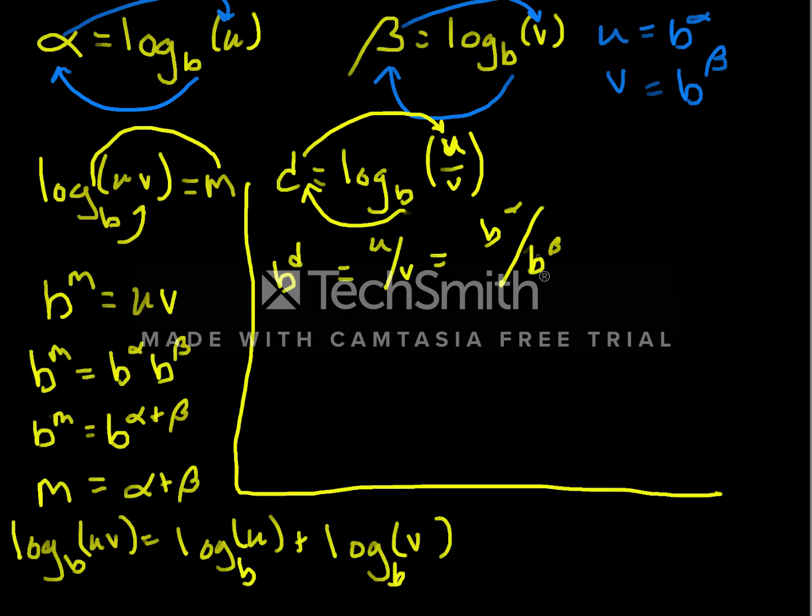And as I said, division with exponents becomes subtraction. So this is b to the alpha minus beta. And again, just like the argument here, if b to the d is equal to b to the alpha minus beta, then we know that d, so I'm going to actually remind you what d is, log base b of u over v is our d, but it has to be equal to alpha minus beta. But that is alpha which is log base b of u, beta which is log base b of v. So this is log base b of u minus log base b of v.